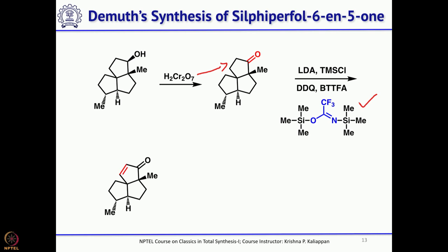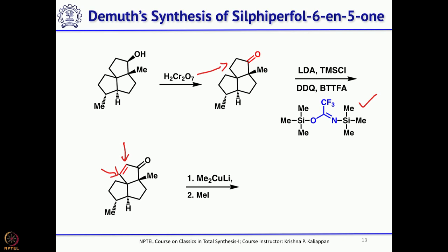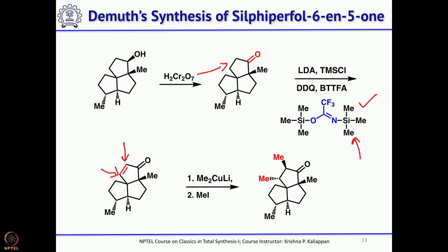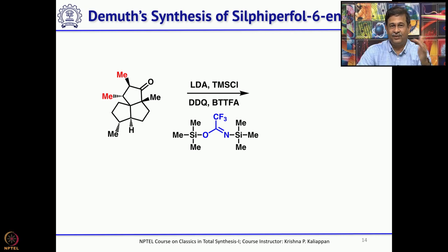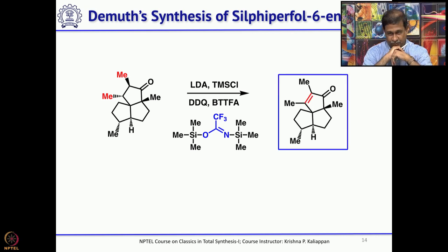Next, two more methyl groups need to be introduced — one here and one here — while keeping the double bond intact. First, 1,4-addition onto the double bond with lithium dimethylcuprate, then quench the enolate with methyl iodide to get two methyl groups; repeat the same process. Then a double bond is introduced via enol-TMS, followed by oxidation to get the natural product.